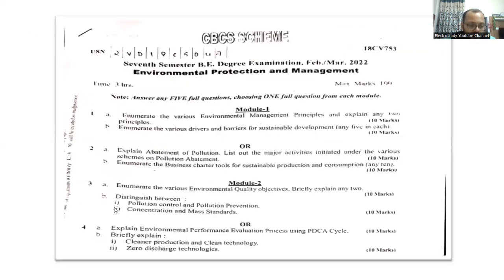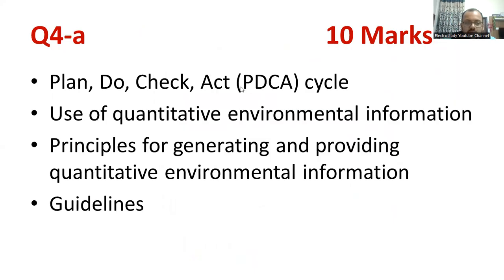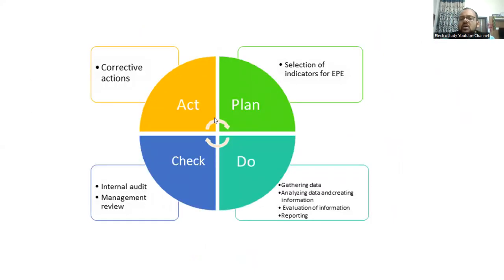Question 4b: briefly explain cleaner production, cleaner technology, and zero discharge techniques — a very simple, direct question with no complication as everything is in the syllabus. For the cleaner production part you get 5 marks and for part two another 5 marks. You can make a diagram — for example, a block diagram for PDCA. When I am an evaluator, I will know that the candidate understands the concept clearly. Highlight with block diagrams, flow charts, or single line diagrams to convince the examiner. That is the tip especially for management subjects.